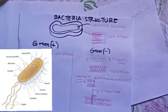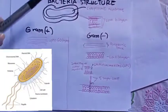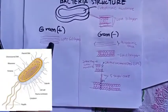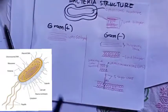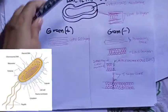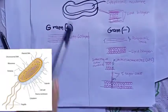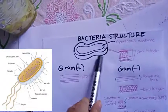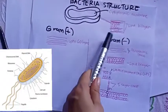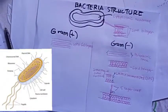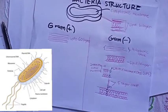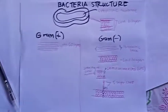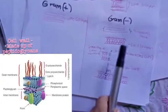I made a bacterial structure here. Remember that the structure of gram-positive and gram-negative are slightly different. The basic structure, looking from inside out, starts with the cytoplasmic membrane. Outside the plasma membrane is the cell wall, which is made up of peptidoglycans.